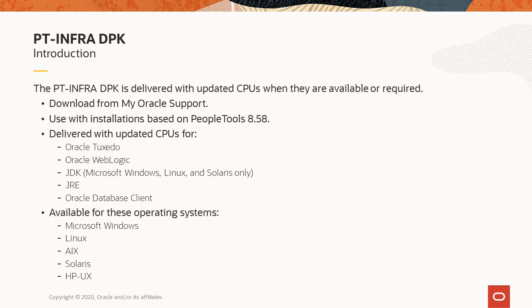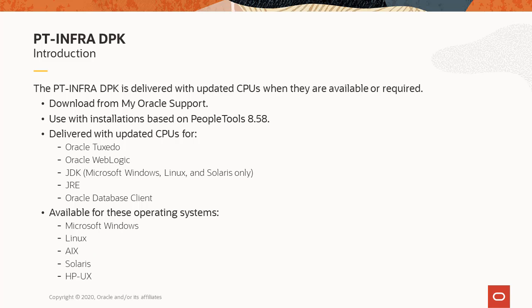The PT-Infra-DPK includes CPUs for Oracle Tuxedo, Oracle WebLogic, JDK, JRE, and Oracle Database Client, and is available for Microsoft Windows, Linux, AIX, Solaris, and HP-UX. Note that Oracle JDK is included only for Windows, Linux, and Solaris operating systems.